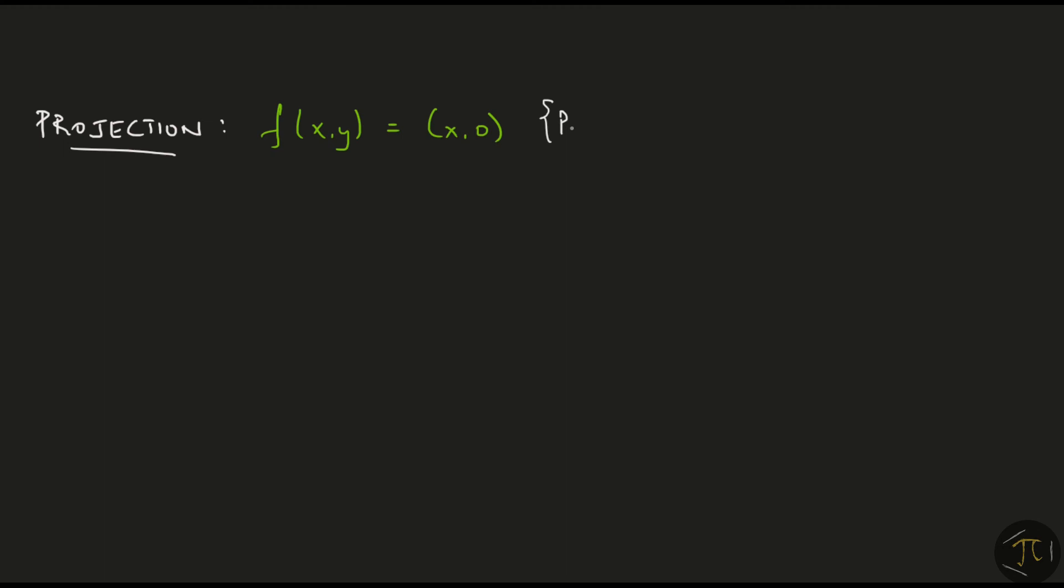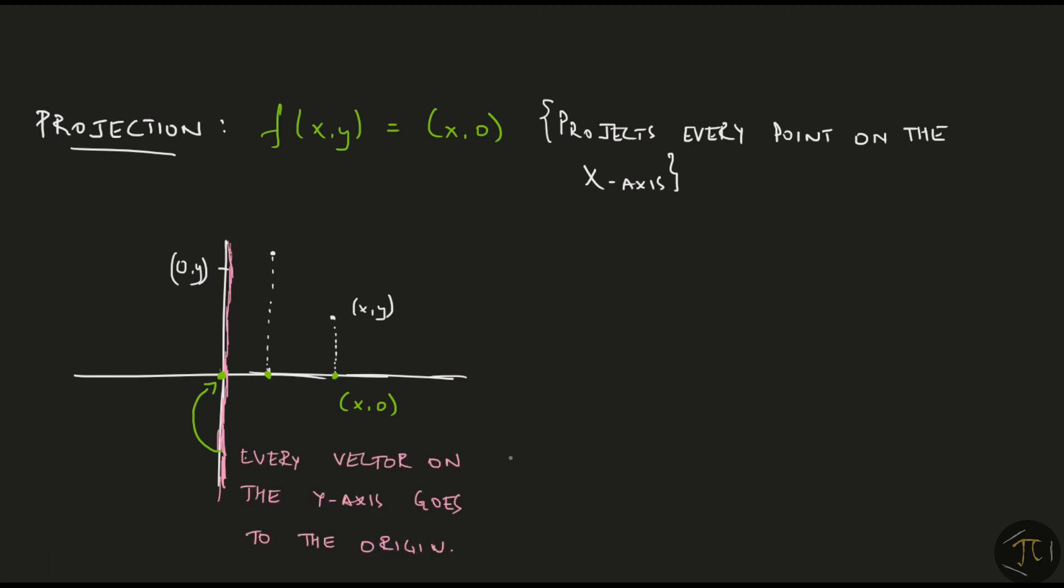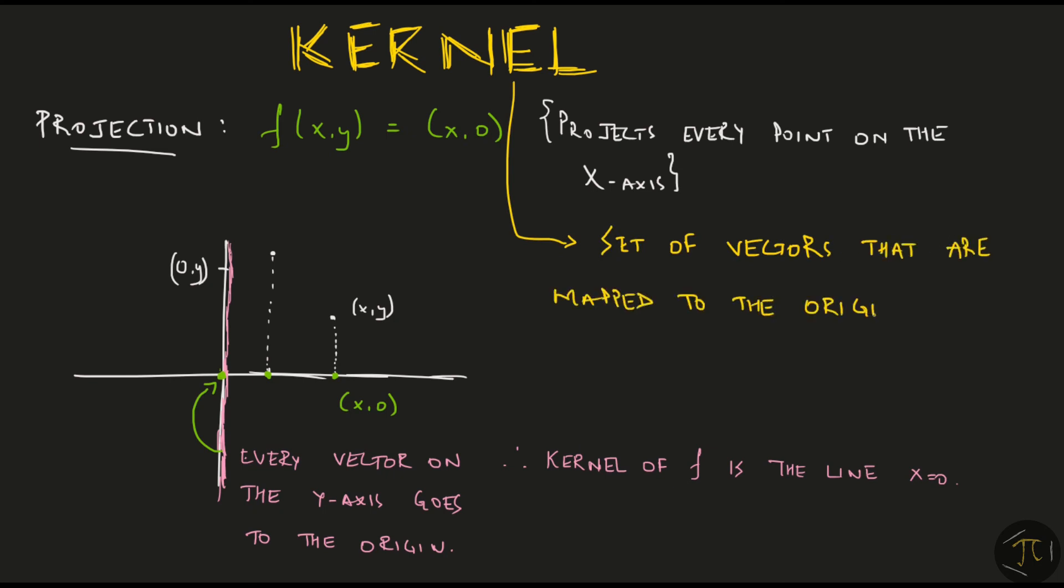The function that I have taken here projects every point in the 2D space on the x-axis. Graphically what this means is that a point (x,y) is transformed to just (x,0). The interesting thing here is that any point (0,y) is transformed to (0,0). So every vector on the y-axis goes to the origin. And so we say that the kernel of f is the line x equals 0. Kernel is just the set of vectors in the input space that are mapped to the origin in the output space.